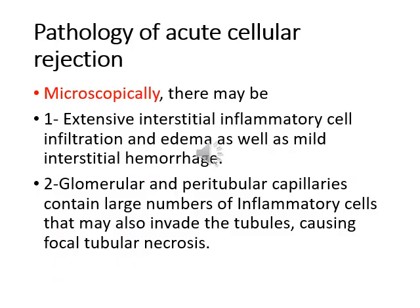In contrast to hyper-acute rejection, in acute cellular rejection we can see extensive interstitial inflammatory cell infiltrate and edema, as well as mild interstitial hemorrhage affecting the interstitial spaces between glomeruli and tubules. Also, glomeruli and peritubular capillaries contain a large number of inflammatory cells that may also invade the tubules, causing focal tubular necrosis.